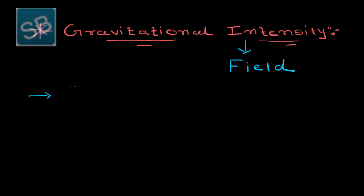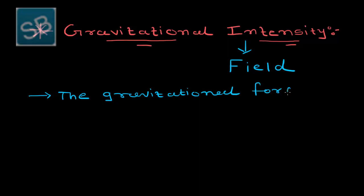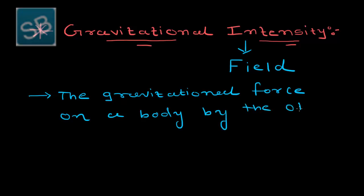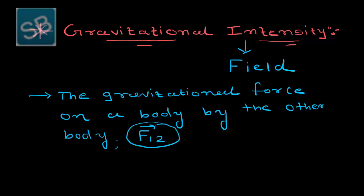You observe this event many times — the gravitational force on a body by the other body. This is basically an F12 type equation, and such a relation is given by Newton's universal law of gravitation, also known as the law of gravitation.